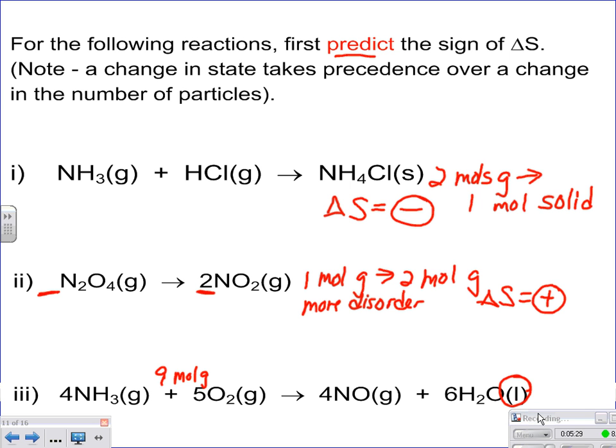we see that one of these substances is a liquid. So that's what your instruction said about trumping. The change in state takes precedence over a change in number of particles. We actually have a change in state. That's going to be the important thing, that you have your gas going to a liquid.